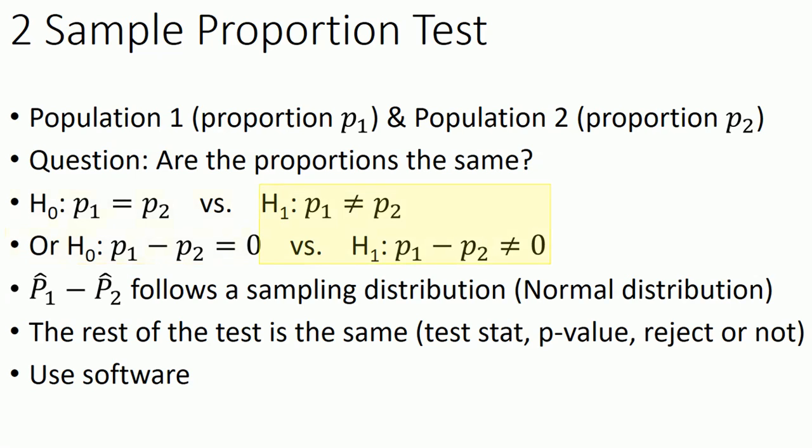The alternative hypothesis could be not equal to, less than, or greater than as has been the case before, and you could express it in either of those two ways. The sample statistic that this is going to be based on is the sample proportion. And we have a sampling distribution for the difference of the two sample proportions, p1 hat minus p2 hat. And this sampling distribution is a normal distribution. And because we know this statistic follows a normal distribution, we can say something about probabilities and we can calculate p value and so forth.